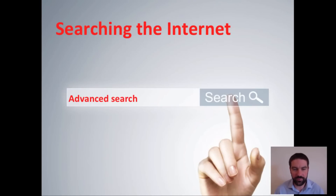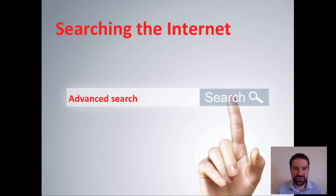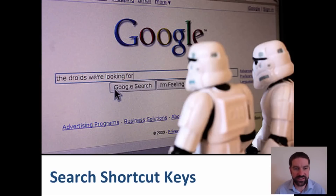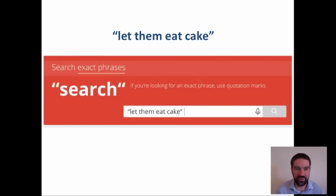There are lots of different types of search engines as we've already found out, and most types of search engine have an advanced search feature. We're going to be looking at the advanced search features within Google, and the first thing I'm going to run through is the search shortcut keys for specific terms.